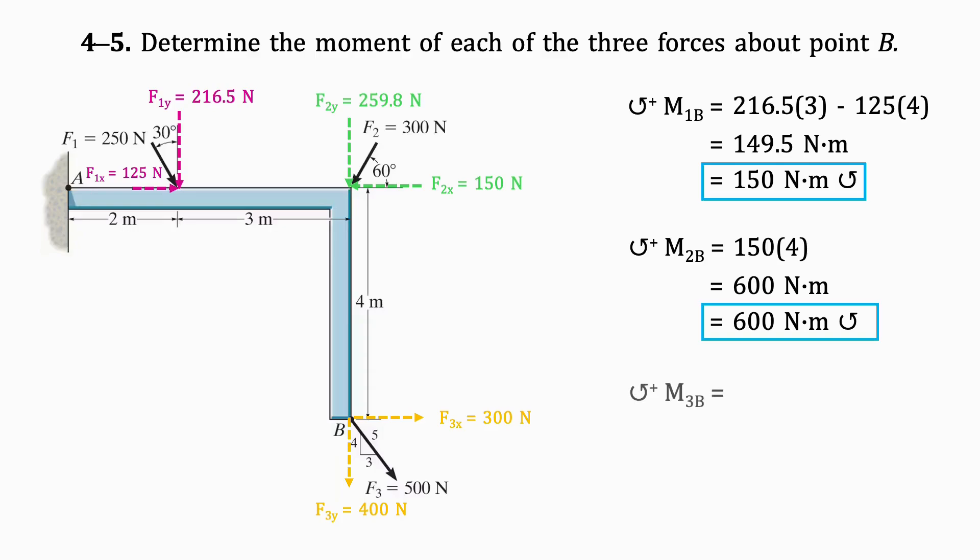Now let's find the moment of F3 about B. Since both of the lines of action of the components of F3 pass through point B, the resultant moment is 0 Newton-meters.